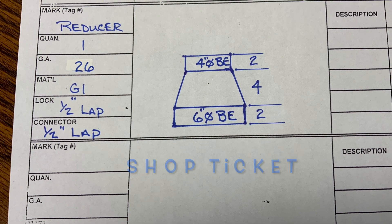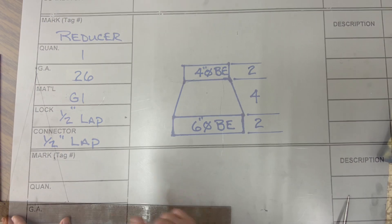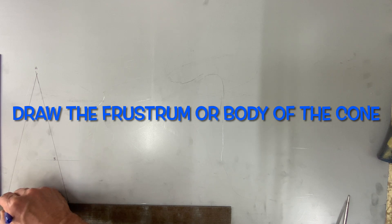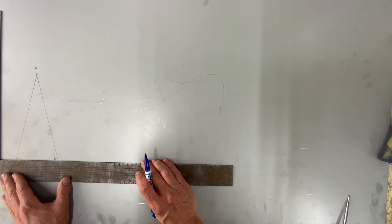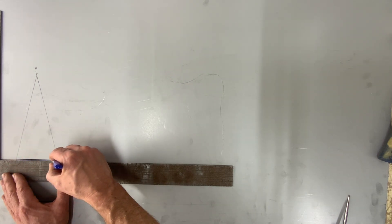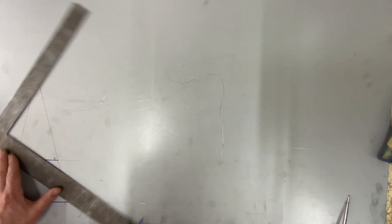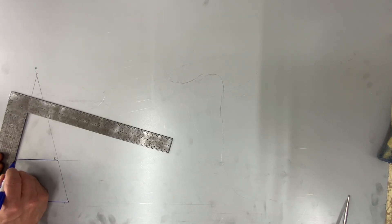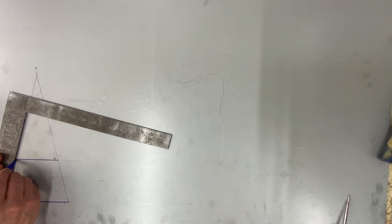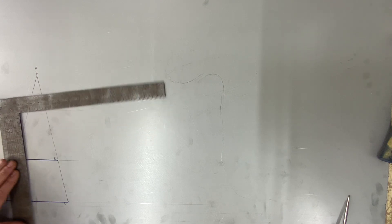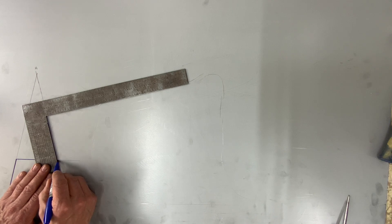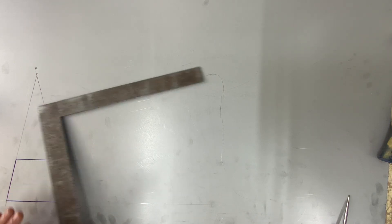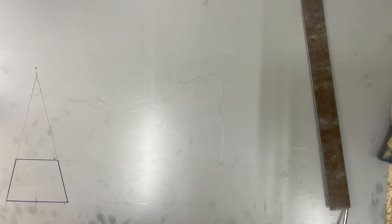First of all, everything starts with a shop ticket based on what we need. After we have that, one of the first ways of developing this cone or frustrum is by laying the whole thing out based on the sizes on the shop ticket. In this case we had six inches on the bottom and four inches on the top, and the whole thing is four inches tall.